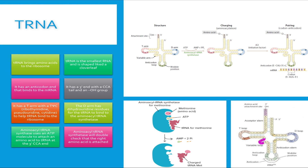There are also two arms of the tRNA. There's a t-arm, which has ribothymidine, pseudouridine, and cytidine. This sequence is necessary for tRNA to bind to the ribosome. The d-arm has dihydrouridine residues, which are needed for the aminoacyl tRNA synthetase to recognize the tRNA. Remember that the aminoacyl tRNA synthetase allows for the binding of a specific amino acid to the tRNA.